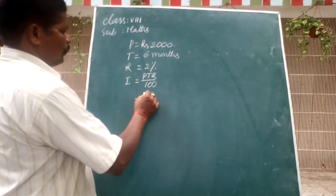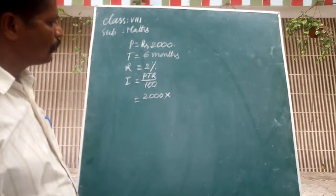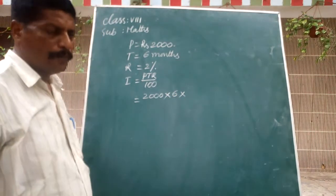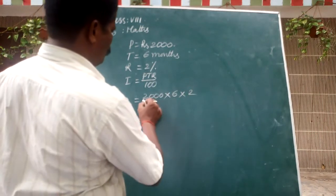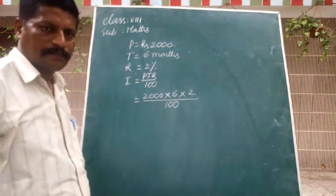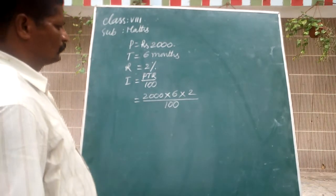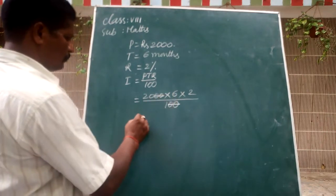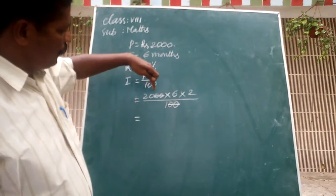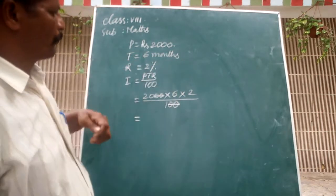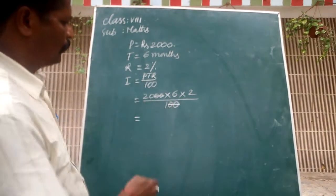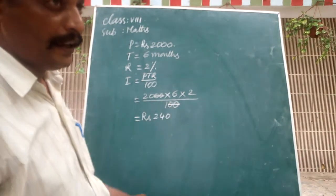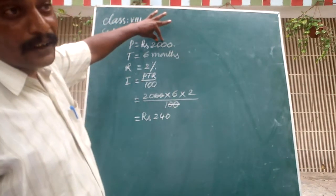P is 2,000, T is six months, R is 2, divided by 100. Cancelling two zeros from numerator and denominator, we get 20 into 6 into 2. That gives us 240 rupees. This is the interest you have to pay in addition to the 2,000.